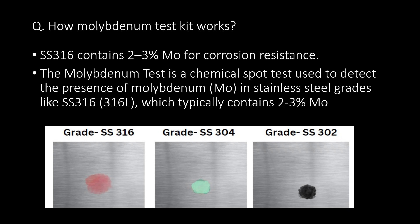SS316 contains 2-3% molybdenum for corrosion resistance. The molybdenum test is a chemical spot test used to detect the presence of molybdenum in stainless steel grades like SS316, which typically contains 2-3% molybdenum.